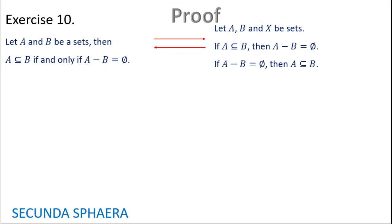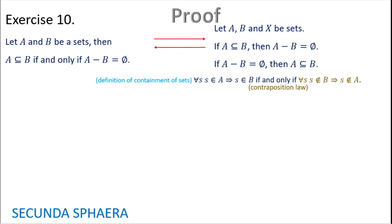Proving the two implications gives the equivalence. Also useful to recall: the definition of containment of sets — for all S, S in A implies S is in B — and by the law of contrapositive, this is equivalent to: for all S, S not in B implies S not in A. These tools are at your disposal if you want to try the exercises from this point.